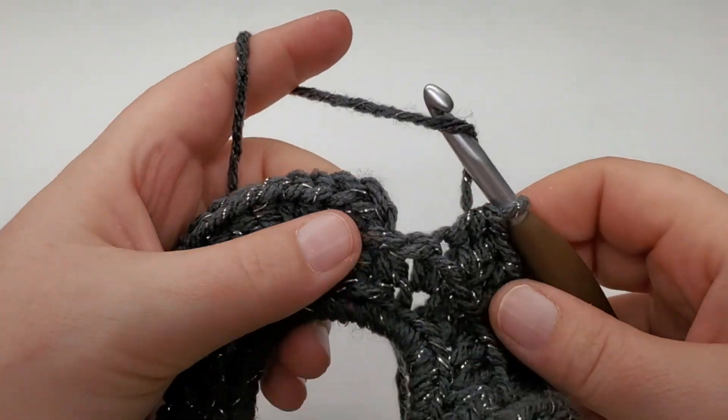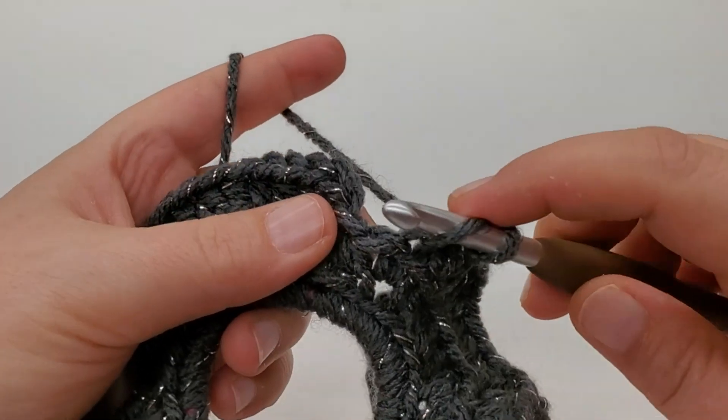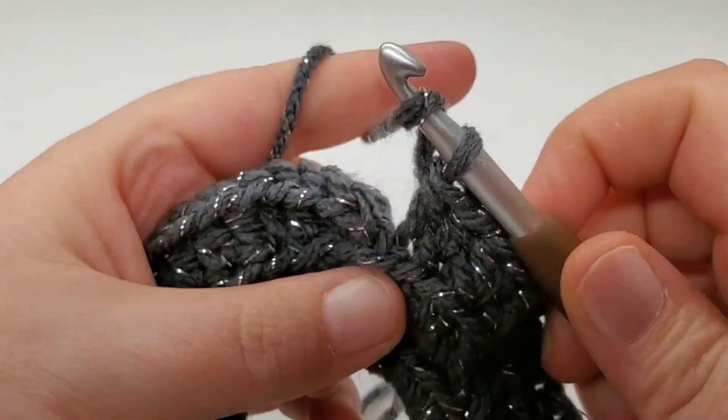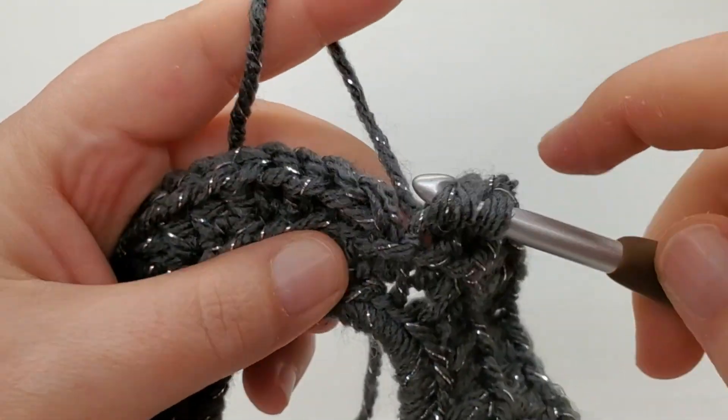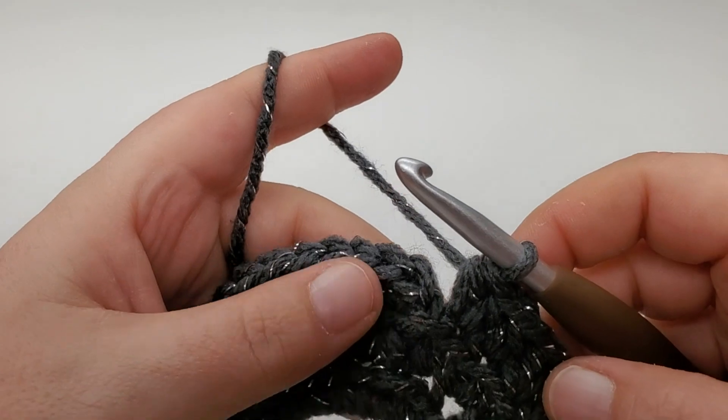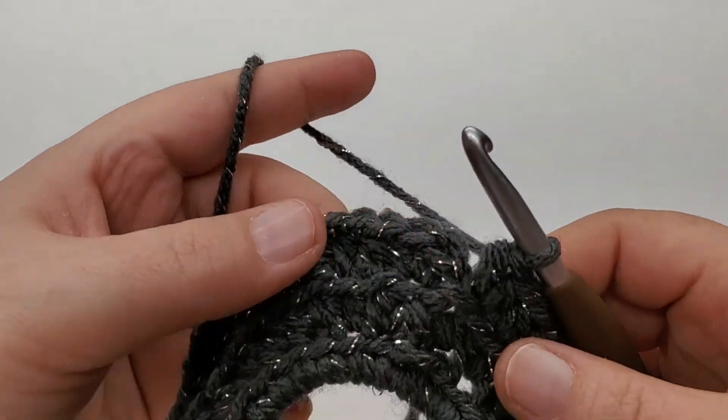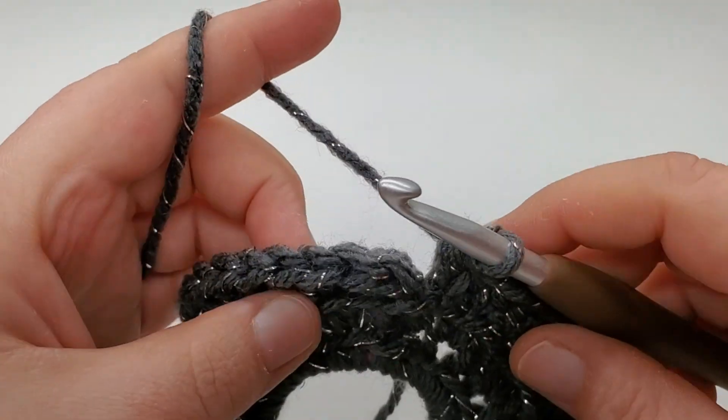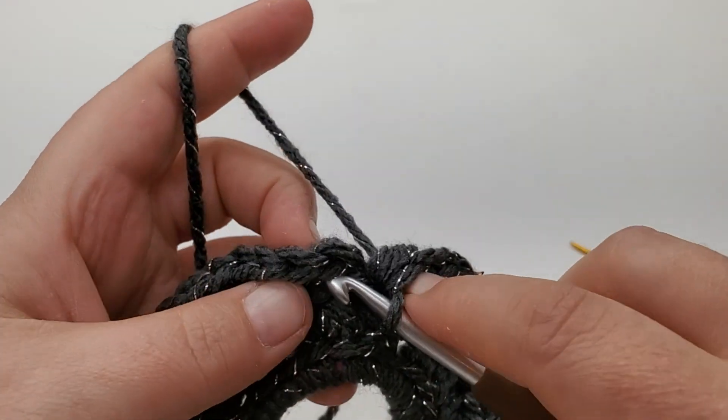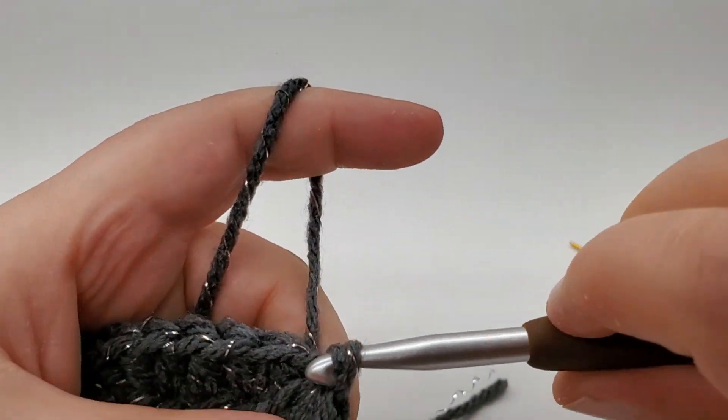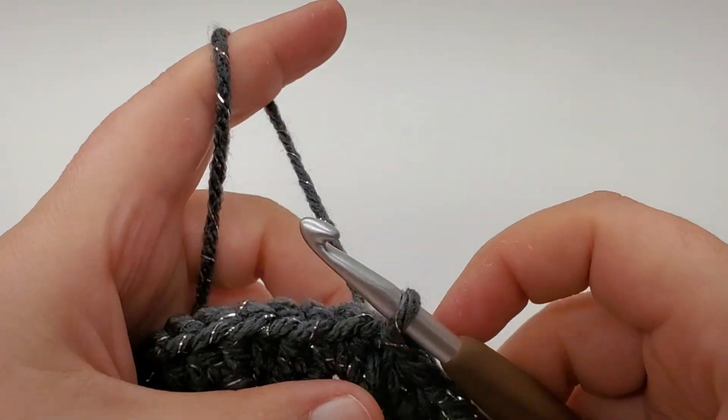I made it back around. And in my last stitch, I'm going to work two back loop half doubles. And at the end of that, we should have a total of 62 back loops. And that's all for our increases. We're not going to increase any more. So go ahead and slip stitch to your first one.